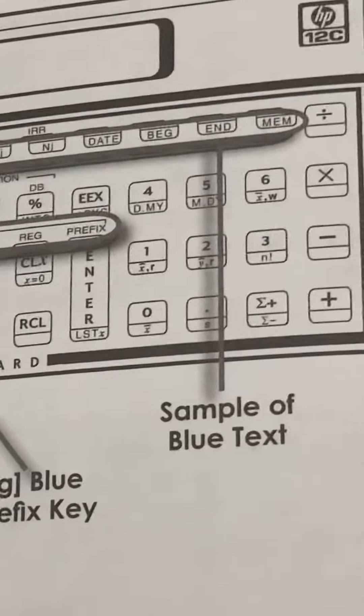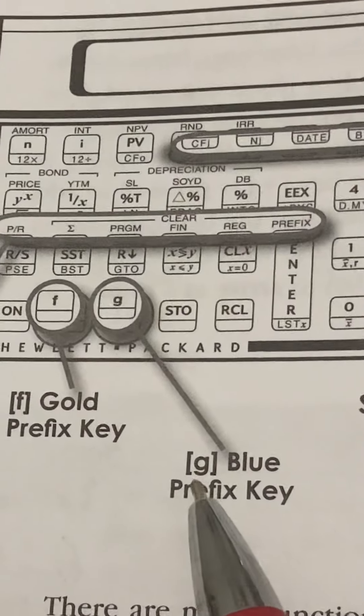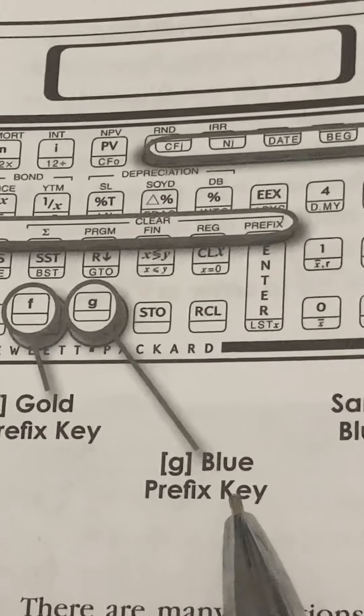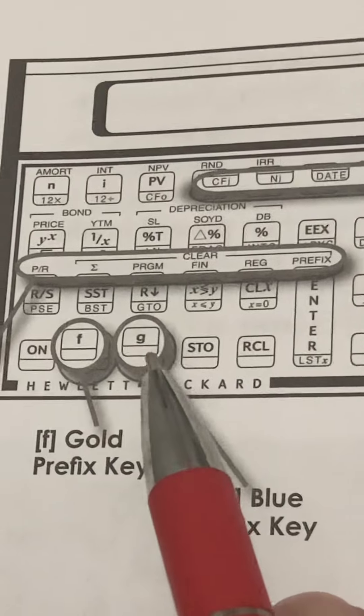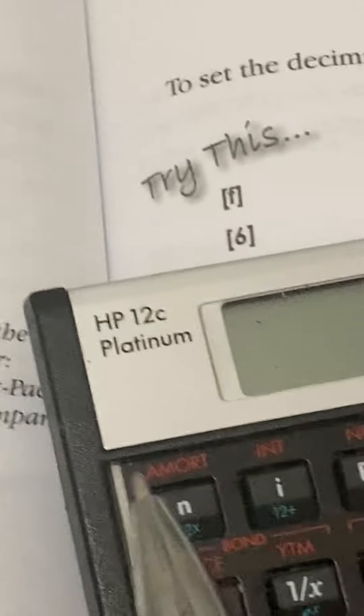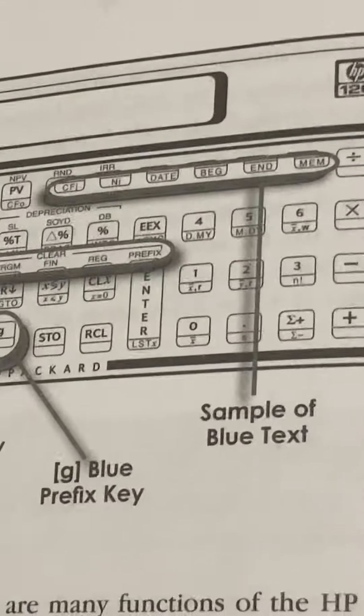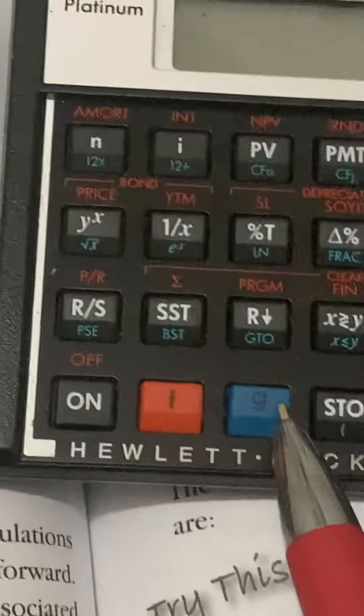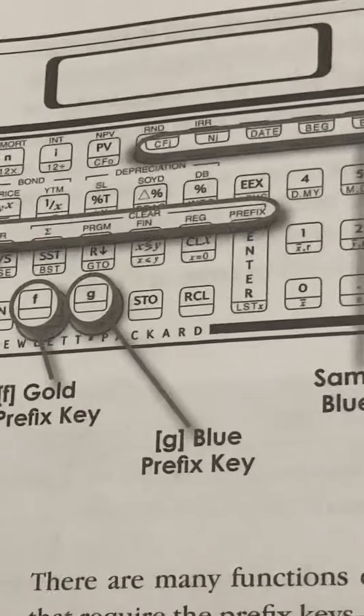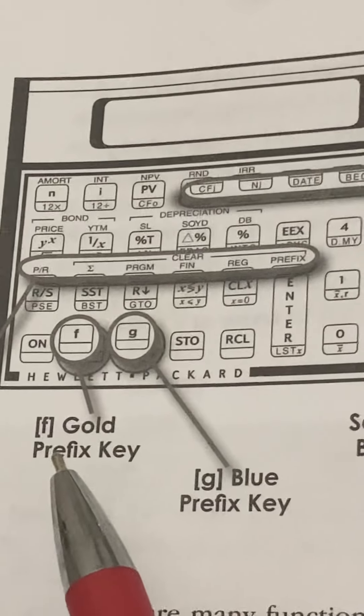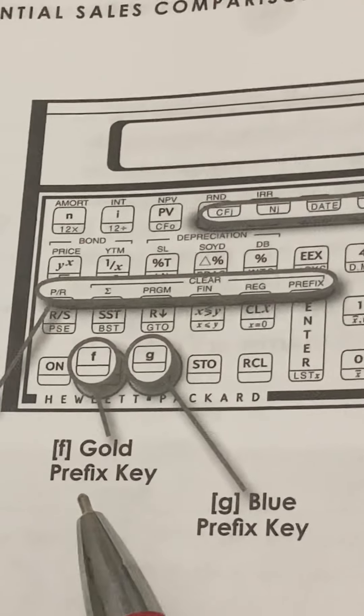The next part of the diagram we're going to look at is the G shift blue prefix key. You can see it here. This is your G, blue prefix key. Here is your F, gold prefix key.